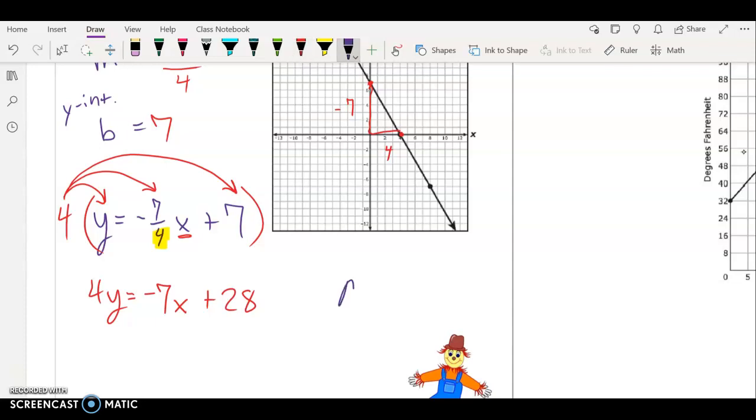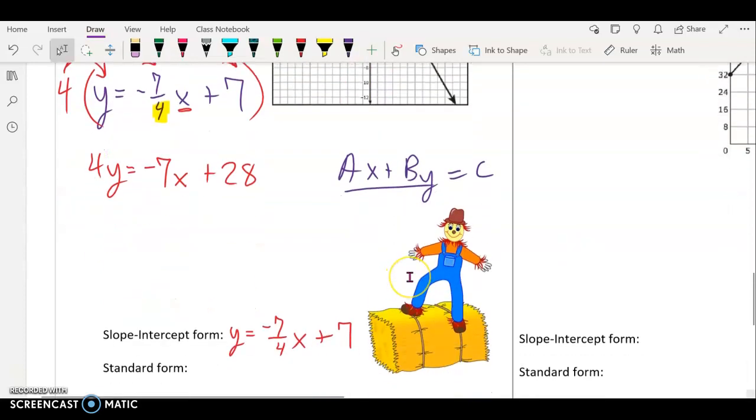Now remembering, if we want standard form, the x and the y have to be on the same side. Right now the x is on one side and the y is on the other. So remember we talked about moving the x to the left, and how do we do that? Because it is negative, we're going to do the opposite and add seven x to both sides.